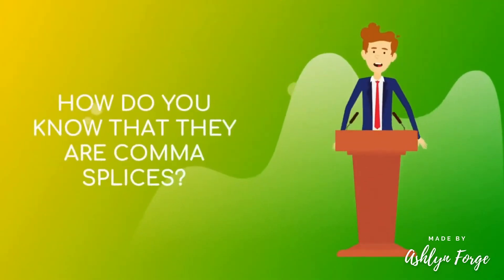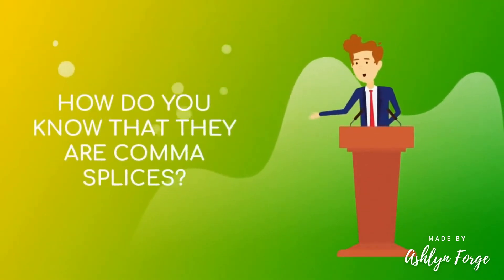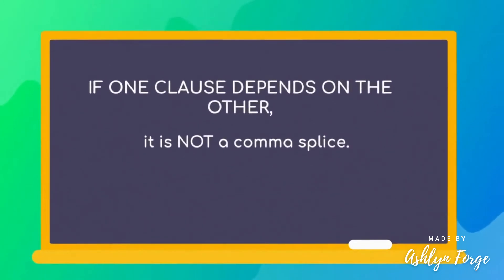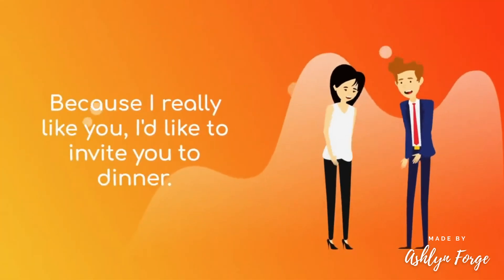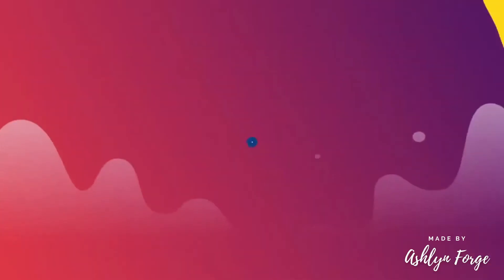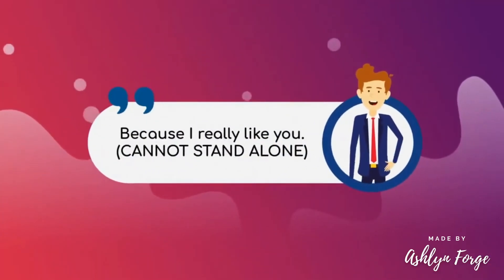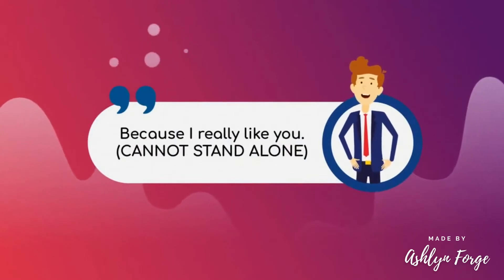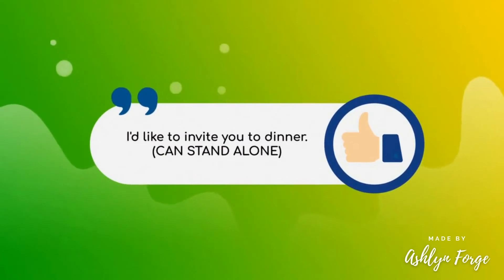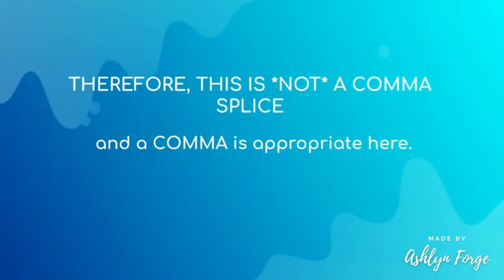How do you know that they are comma splices? You can identify them by splitting them in two. If one clause depends on the other, it is not a comma splice. For example: 'Because I really like you, I'd like to invite you to dinner.' 'Because I really like you' cannot stand alone, but 'I'd like to invite you to dinner' can. Therefore, this is not a comma splice, and a comma is appropriate here.